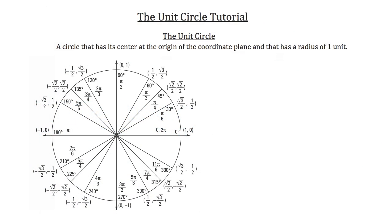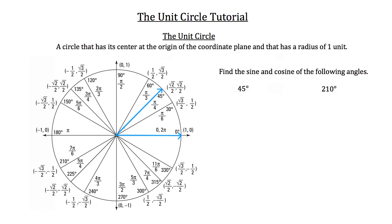Let's begin by finding the sine and cosine of 45 degrees. I'm going to draw that 45-degree angle here in standard position. Notice that one of my rays lies on the x-axis and the vertex is at the origin. If I trace up along that 45-degree line, it's going to be pointing to that root 2 over 2 value for sine and cosine.